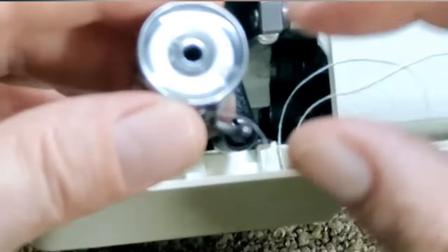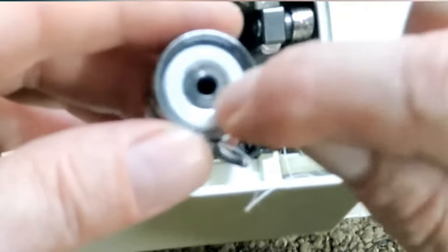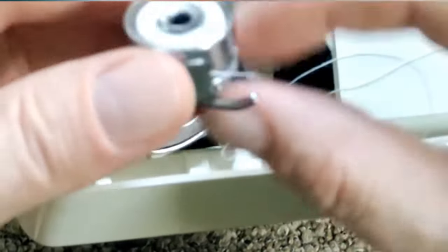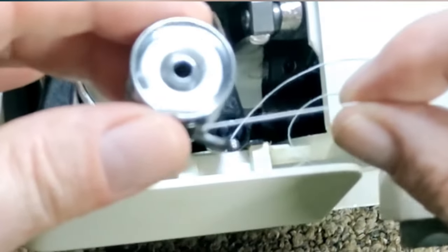So make sure that in any sewing machine, when you put the bobbin case in and you pull on the thread after it's in the tension, it is turning in the opposite direction.